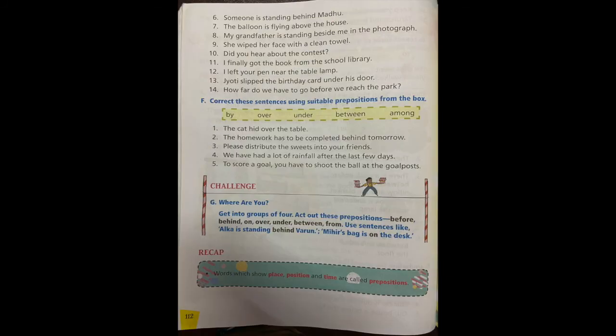Correct these sentences using suitable prepositions from the box: by, over, under, between, among. Now look at first one: the cat hid dash the table. Sorry, over the table. Right, over is the preposition. Can the cat hide sitting on the table over? No, that is wrong. It is under. Under should be the right one. Correct it. You can just underline over and write down under on top of it.